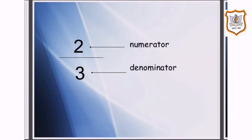Now, fraction notation. A fraction has two parts. The number on the top of the line is called a numerator. It tells how many equal parts of the whole or collection are taken.